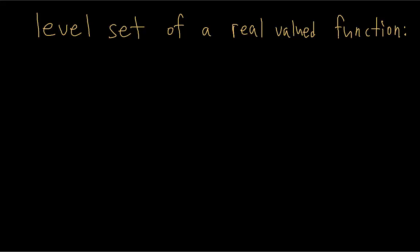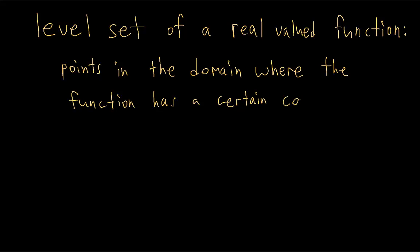If we have a real-valued function, remember real-valued just means the output is a single real number, we can make what's called a level set of the function. A level set of a real-valued function is the collection of all of the points in the domain where the function has a constant value.